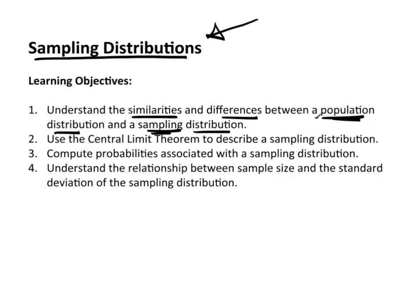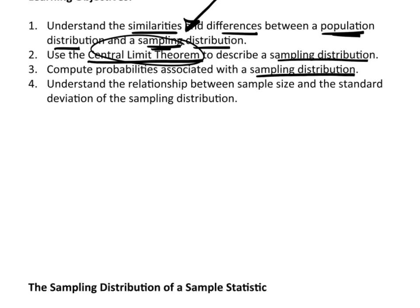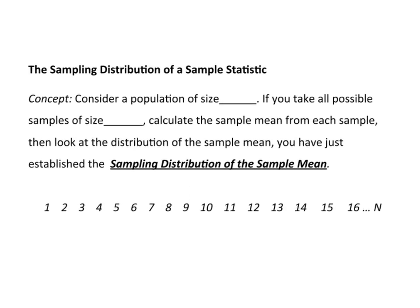That fundamental understanding will carry us through literally the rest of the course. We want to use the central limit theorem to describe sampling distributions — it is an incredibly important theorem and it allows us to do things we couldn't do otherwise. We also want to compute probabilities associated with the sampling distribution, which will rely on the central limit theorem, and we want to understand the relationship between sample size and the standard deviation of the sampling distribution.